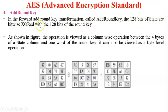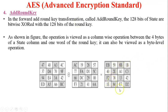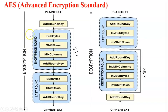The inverse shift row transformation performs circular shifts in the opposite direction: row 1 no shifting, row 2 one byte right shift, row 3 two byte right shift, row 4 three byte right shift. Applying the inverse shifting to a shifted matrix regenerates the original matrix.